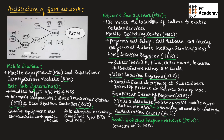Now let us see the network subsystem. Network subsystem is the core network that tracks the location of the caller to enable cellular services. This network subsystem consists of five functional units: mobile switching center, home location register, visitor location register, equipment identity register, and authentication center.